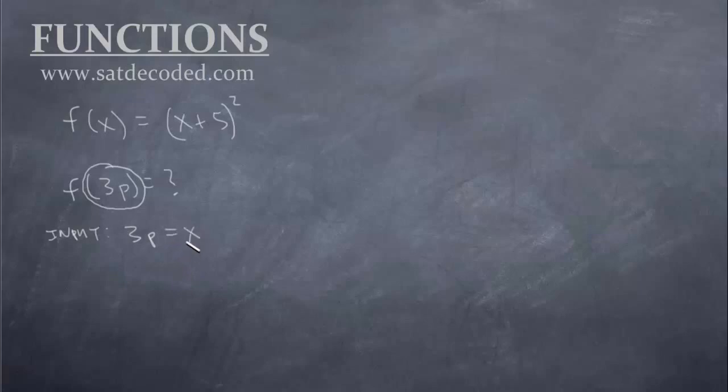Alright, so then what is our output? Remember, there are four outputs. So, y is one of them. The function itself is one of them. But remember, the x is equal to 3p. So, we can just say it's f of 3p.